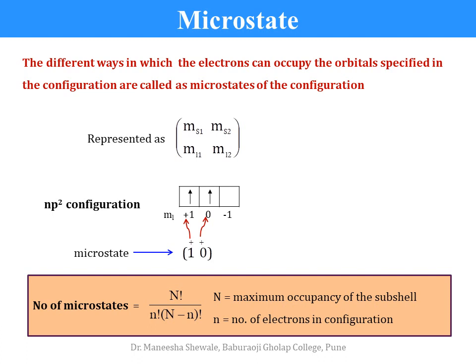The number of microstates can be calculated using the factorial formula: capital N factorial divided by small n factorial into (N minus n) factorial, where capital N is the maximum occupancy of the subshell and small n is the number of electrons in the configuration.